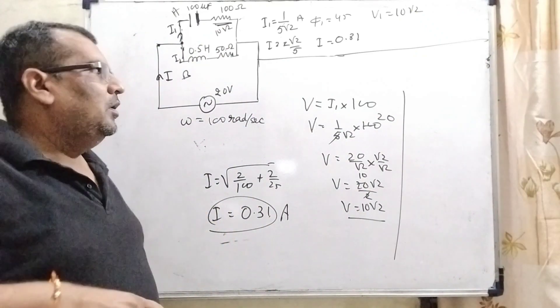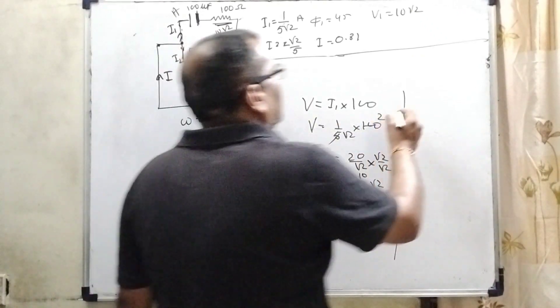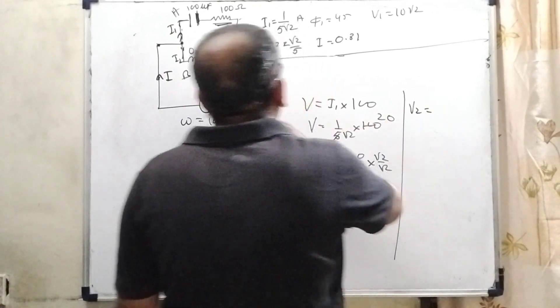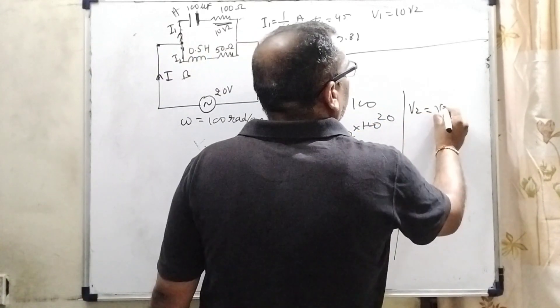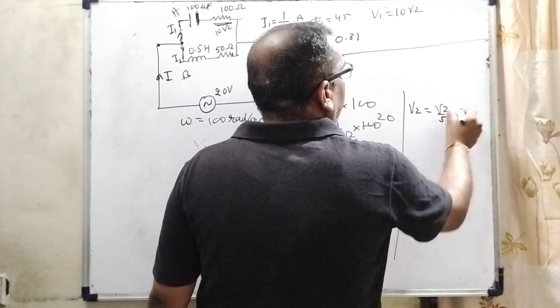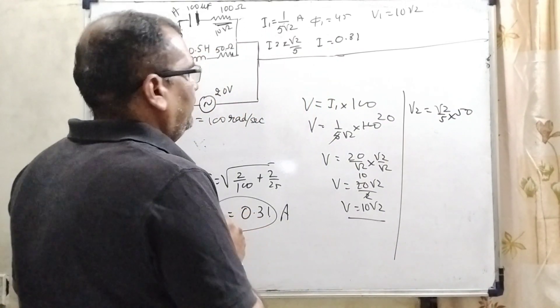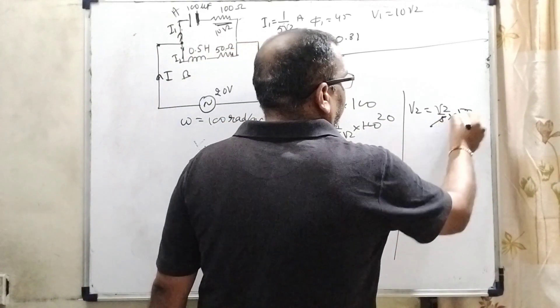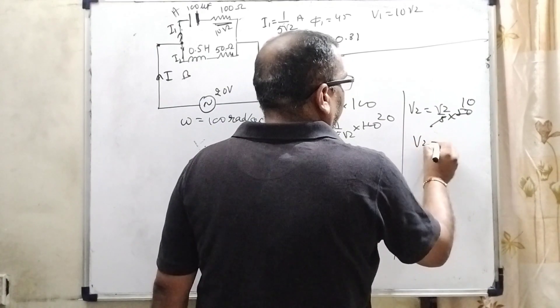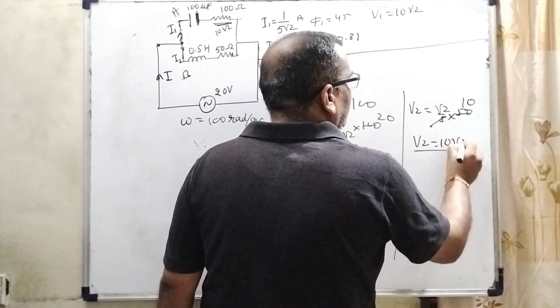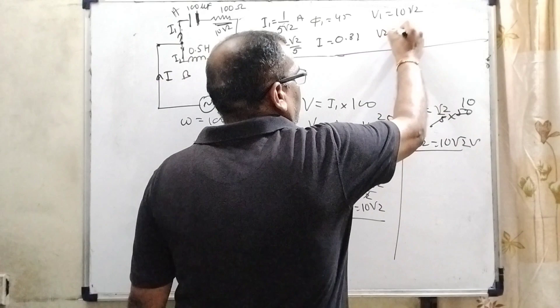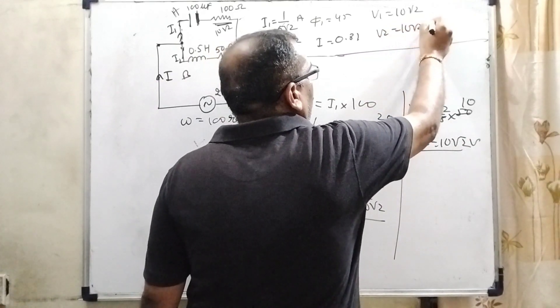For this potential 10 root 2 means V1. Now for 50 means we have to find out V2, that is I2. What is I2? Root 2 by 5 into 50. So 5 times 50. Here V2 equal to 10 root 2 volt. So V2 equal to 10 root 2 volt.